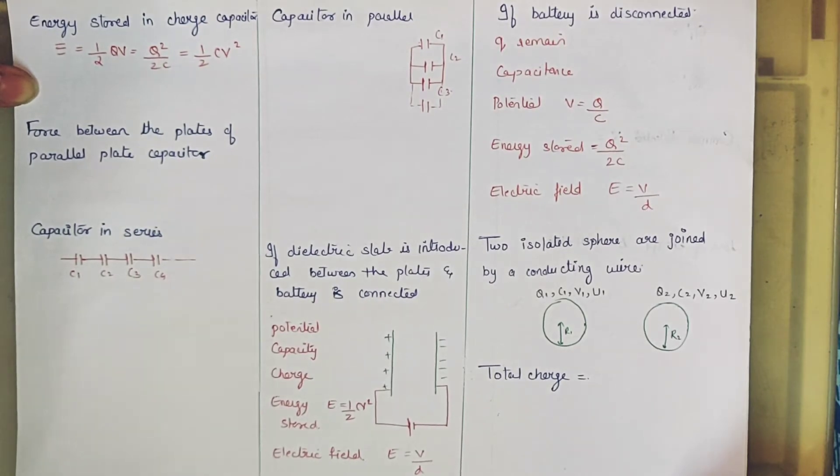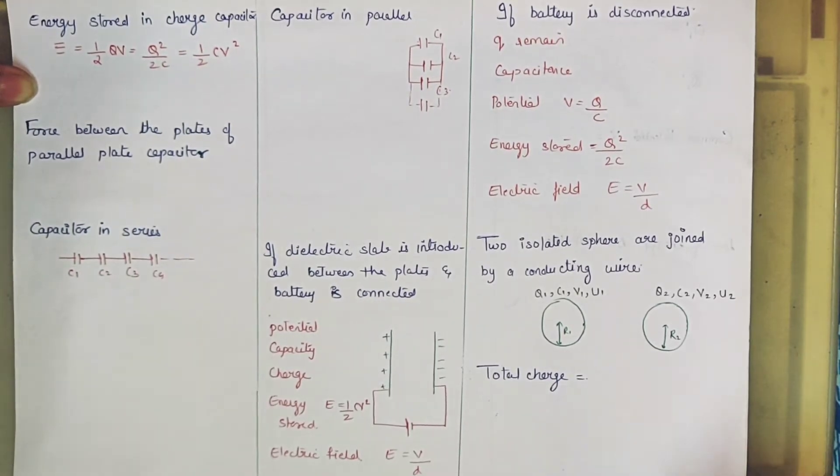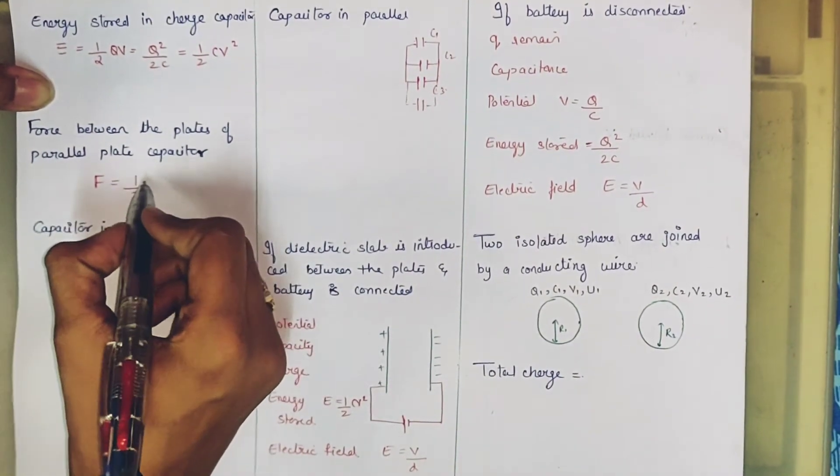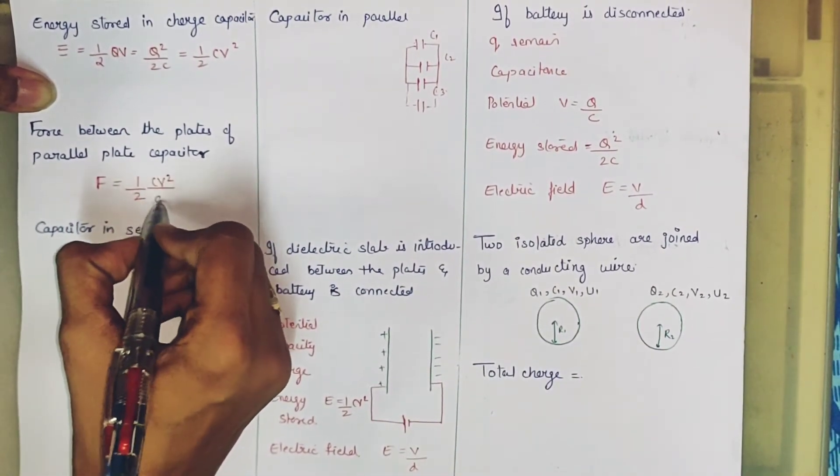Next is force. If these are the two plates in the capacitor, how much force will it be? This formula is half CV square by D.